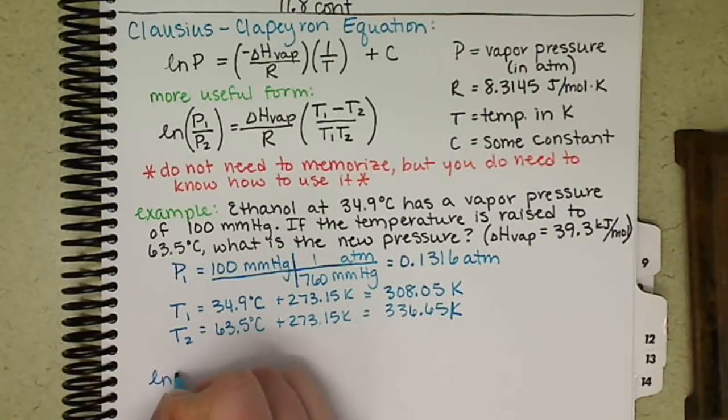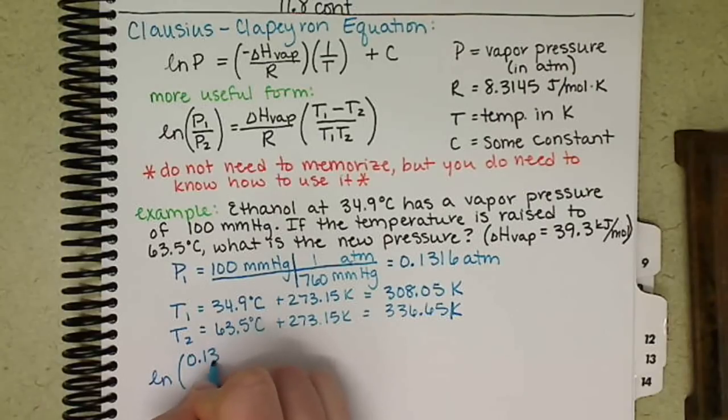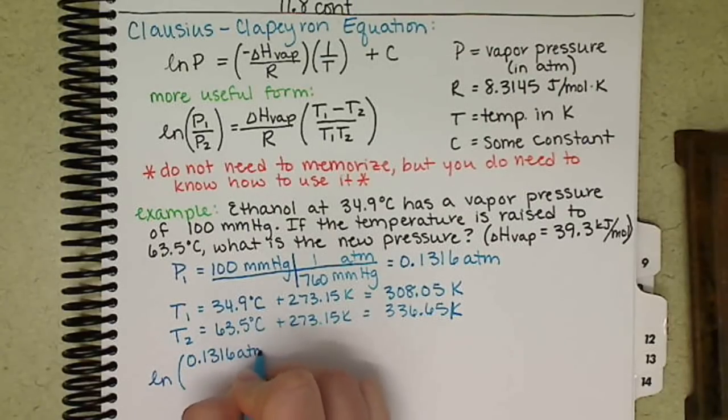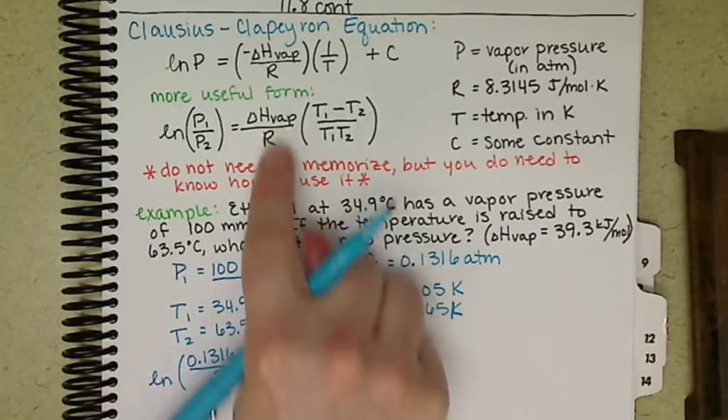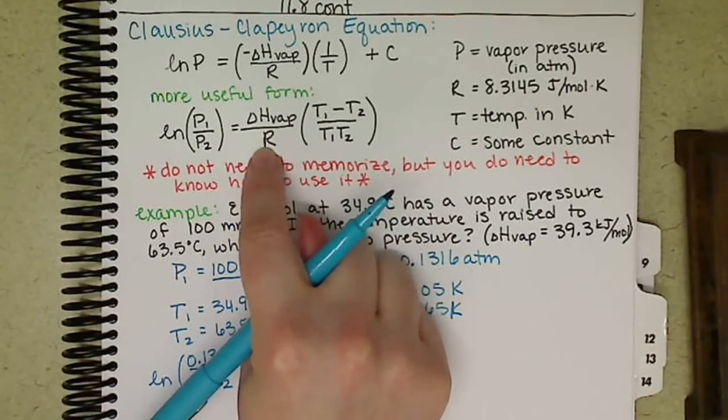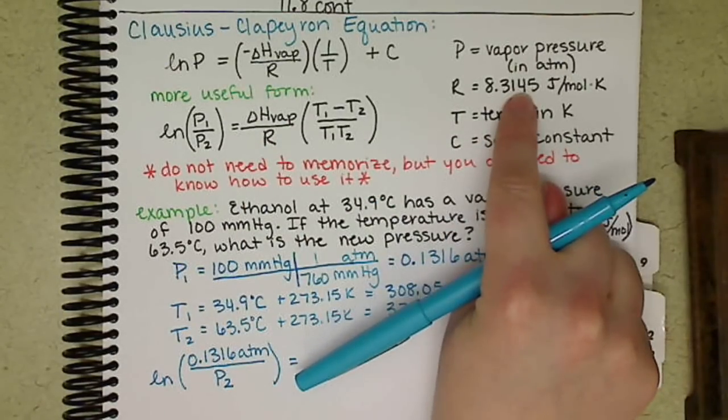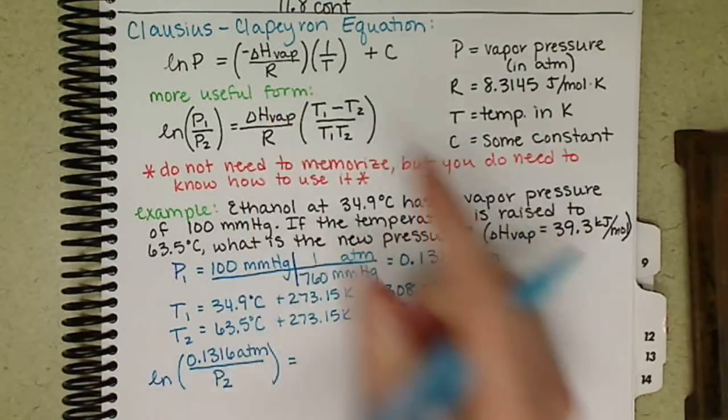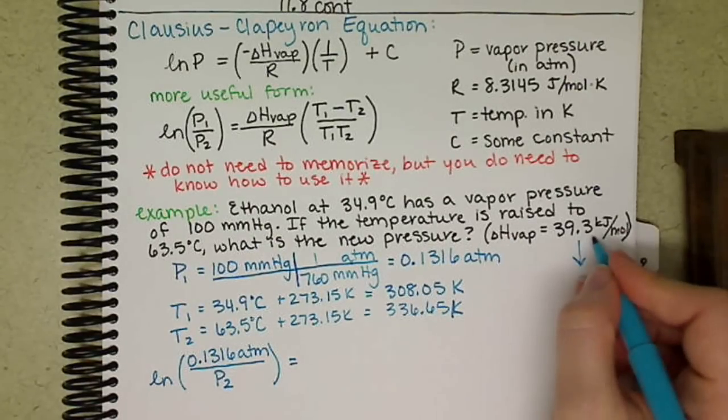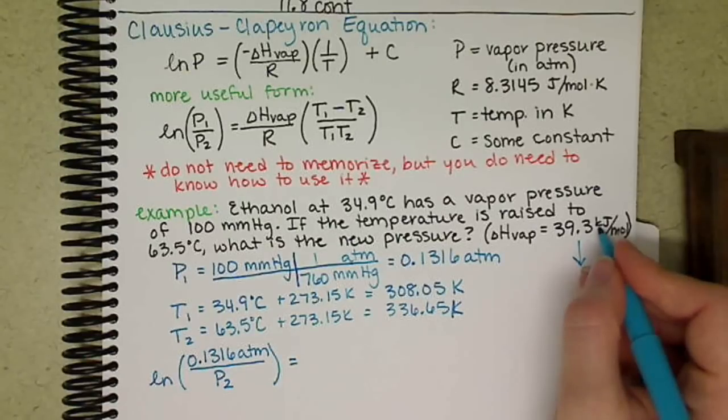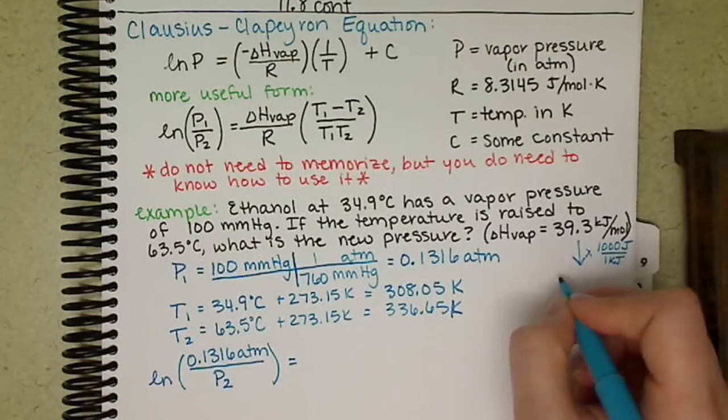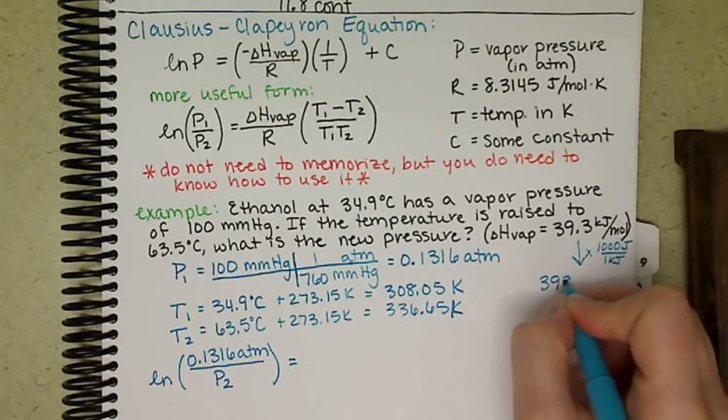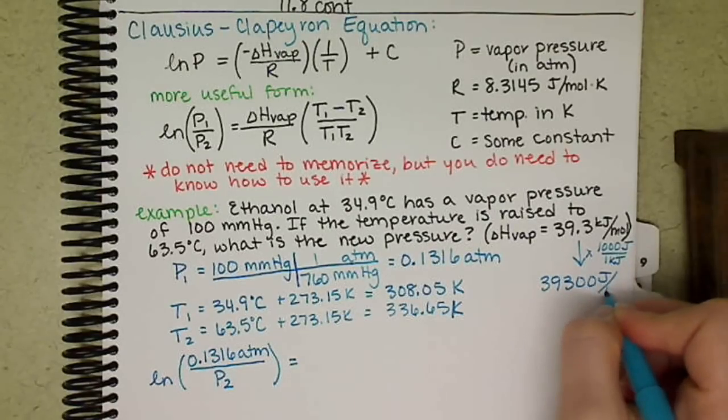So we have natural log of 0.1316 atmospheres divided by P2, which is what we're searching for. I want my delta H of vaporization. My R value is in joules, so I'm just going to go ahead and convert my delta H of vaporization from kilojoules to joules. And so we want 1,000 joules per 1 kilojoule giving us 39,300 joules per mole.